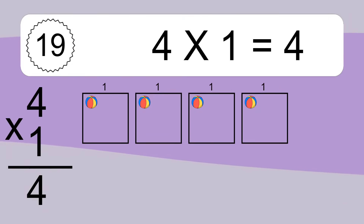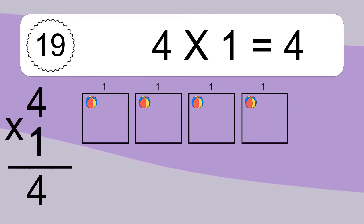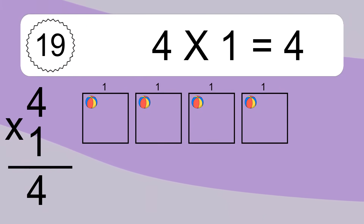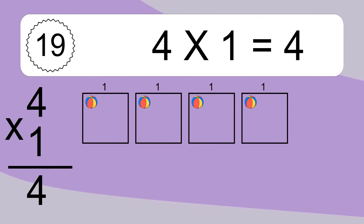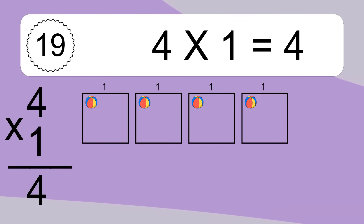4 times 1 equals what? We have 4 boxes, and each box has 1 colorful ball inside. If you count all the balls in all the boxes together, you will have 4 times 1 balls. This equals 4 balls.